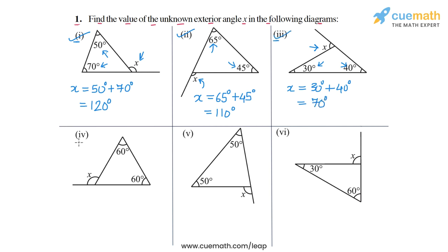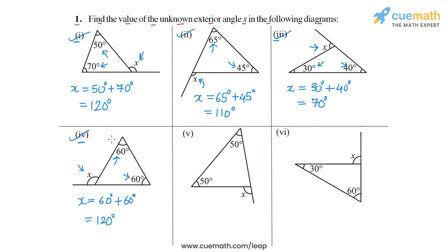Then in part four, x is this exterior angle and the opposite interior angles are 60 degrees and 60 degrees. So x is equal to 60 degrees plus 60 degrees, and this will be equal to 120 degrees. So this is the answer for part four.